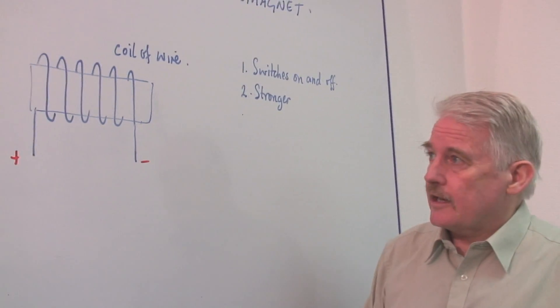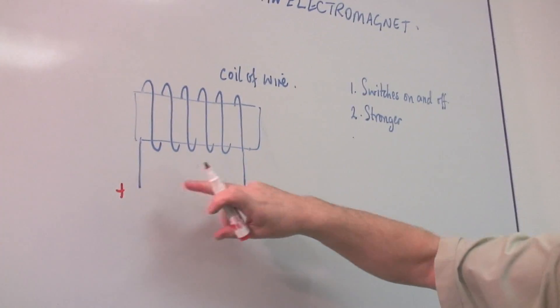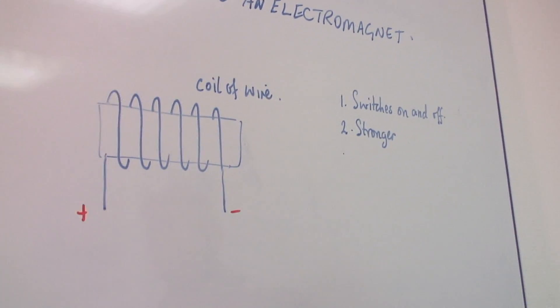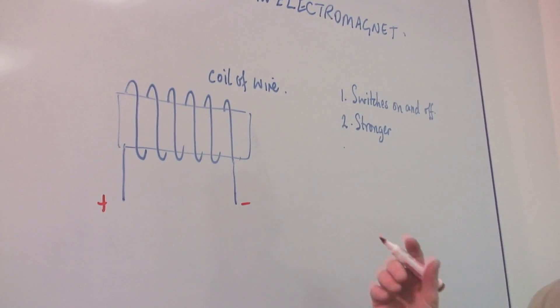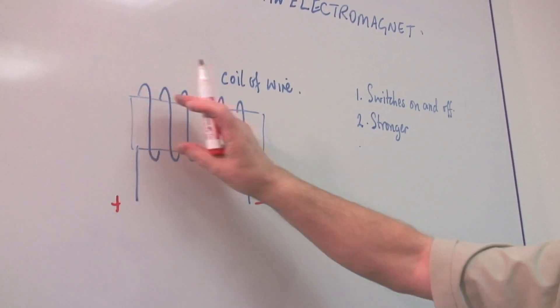The basis of an electromagnet is a coil of wire. The wire has to be insulated, of course, and it has to be wrapped in a circle around some kind of former.